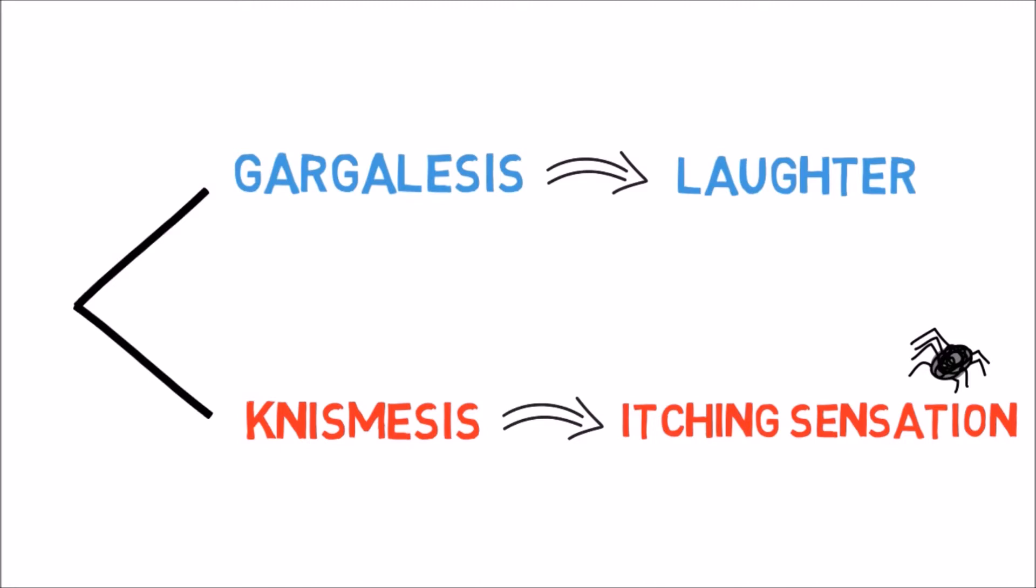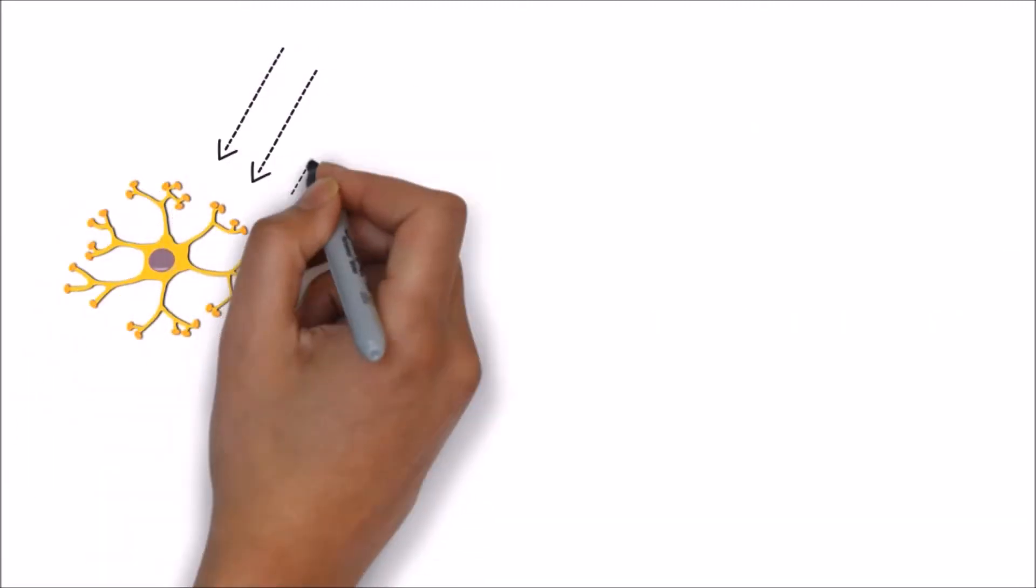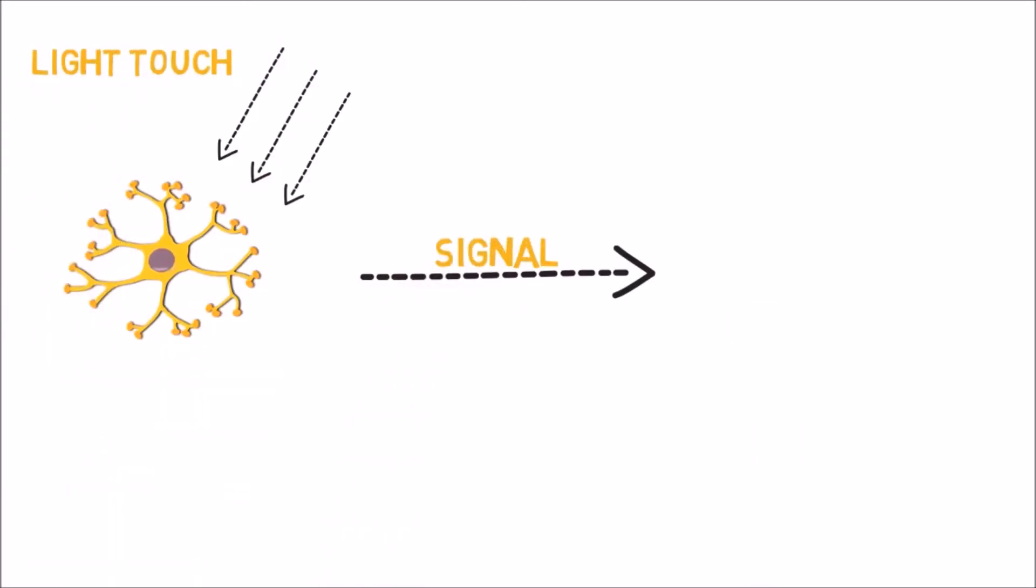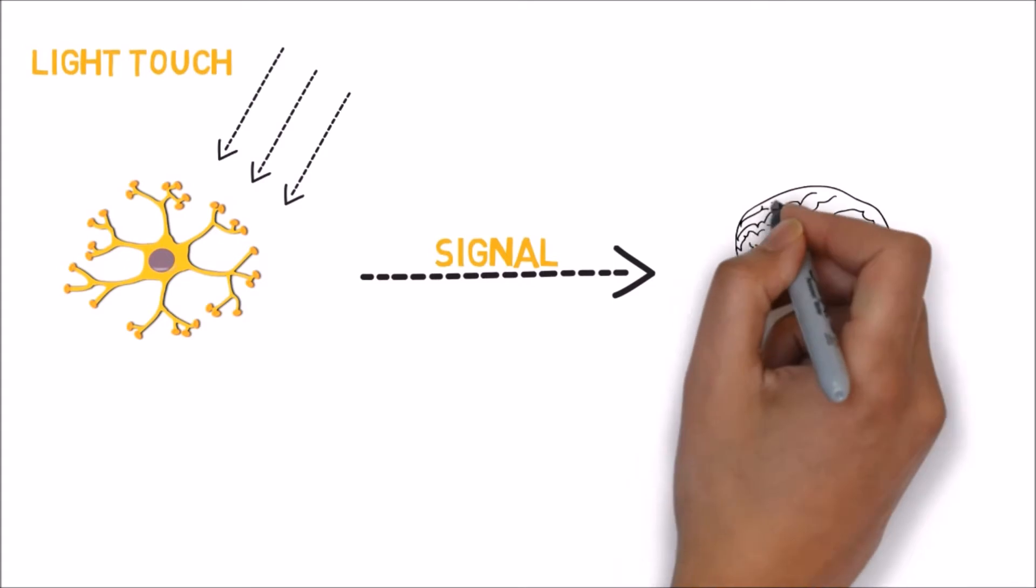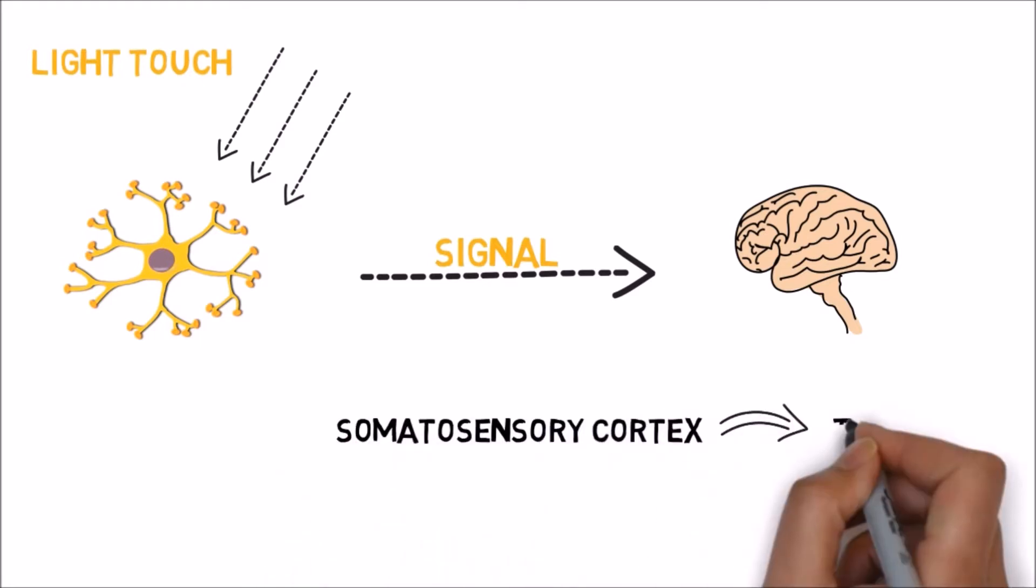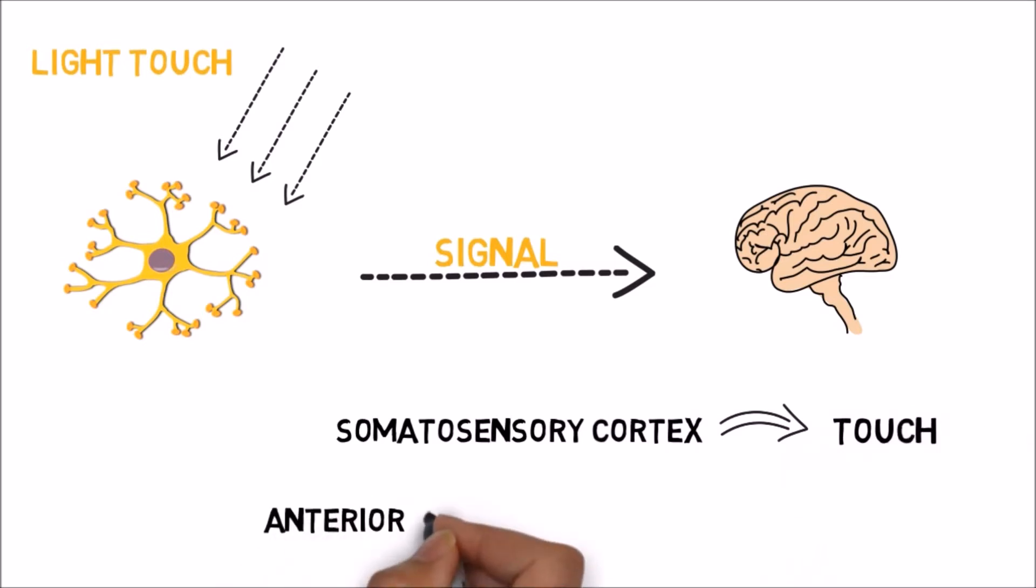A quick fact, you can't tickle yourself because your brain knows it's coming. When the nerve endings in your epidermis, the surface of the skin, are stimulated by a light touch, they send a signal through the nervous system to your brain. Using functional magnetic resonance imaging machines, researchers have determined that two areas of the brain create that tickle sensation. The somatosensory cortex, the area responsible for analyzing touch, and the anterior cingulate cortex, which is involved in creating pleasurable feelings.